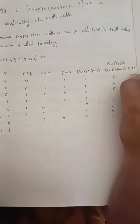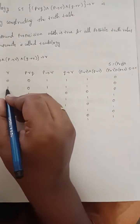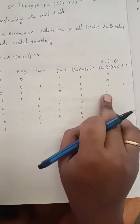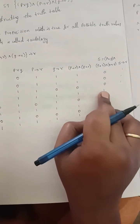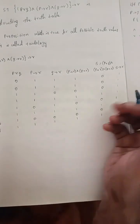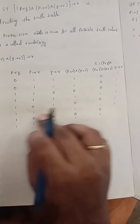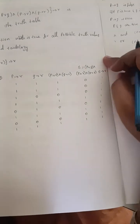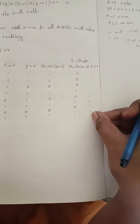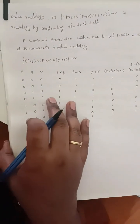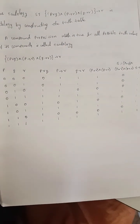Now S connected to R — that is the final implication. All results are true. Therefore, this is a tautology. I hope you are understanding. Thank you.